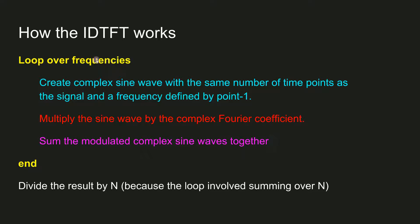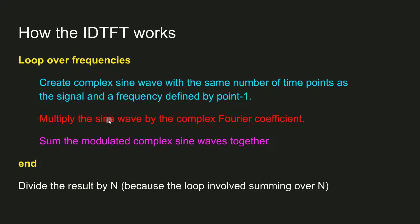Loop over frequencies, create a complex sine wave — same as with the forward Fourier transform — and then the extra step is to multiply the sine wave by the corresponding complex Fourier coefficient, corresponding in terms of the frequency. Then you sum all of these modulated complex sine waves together. In the end, we'll have to divide the result by n, the number of frequencies, because this loop involves just adding more and more sine waves together, and we need to normalize by dividing by the number of summations.